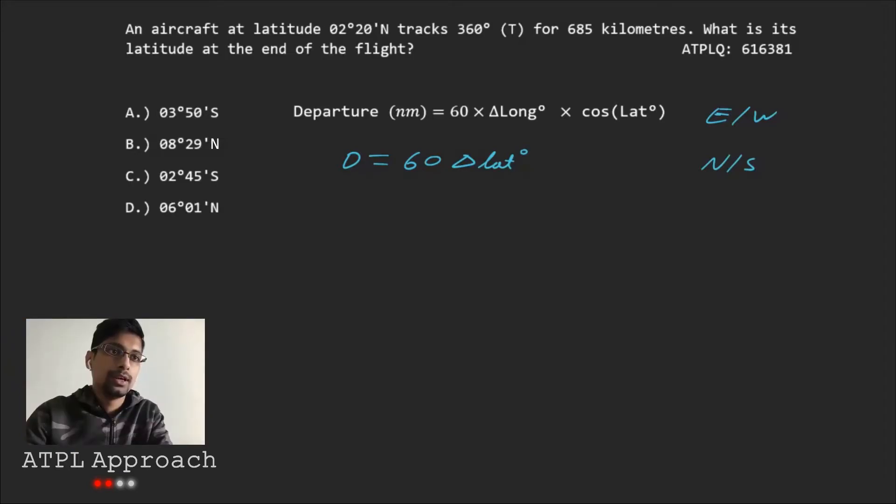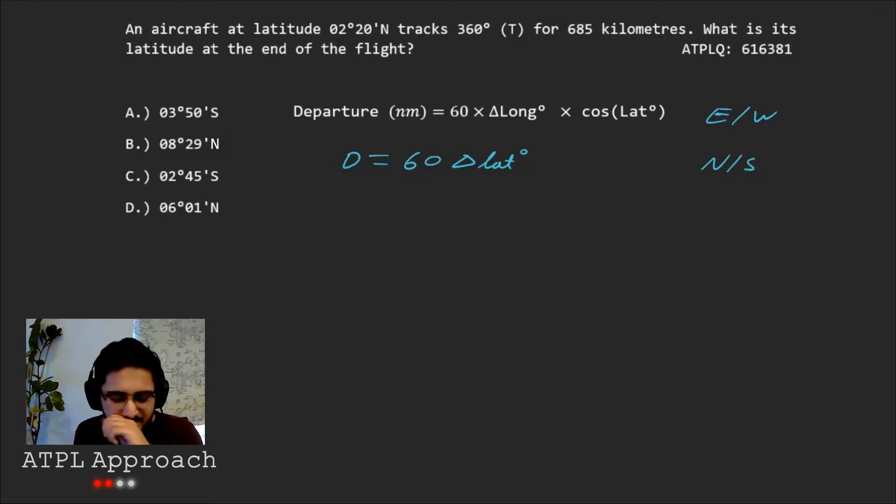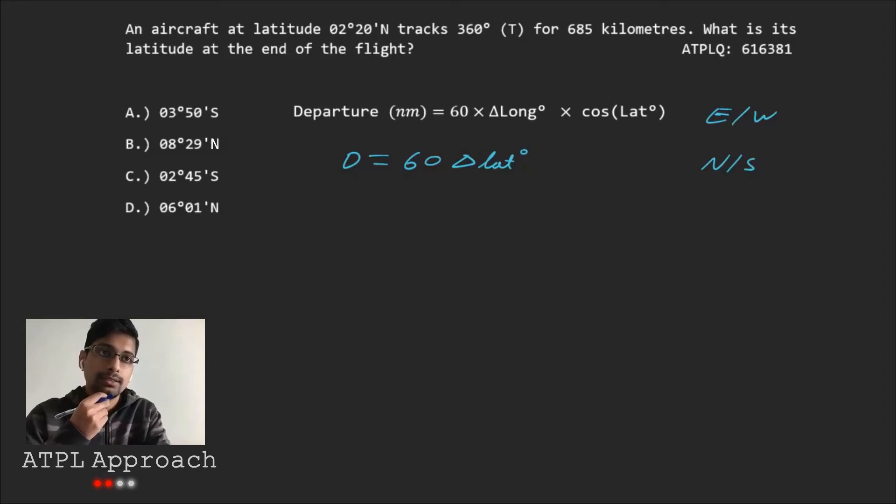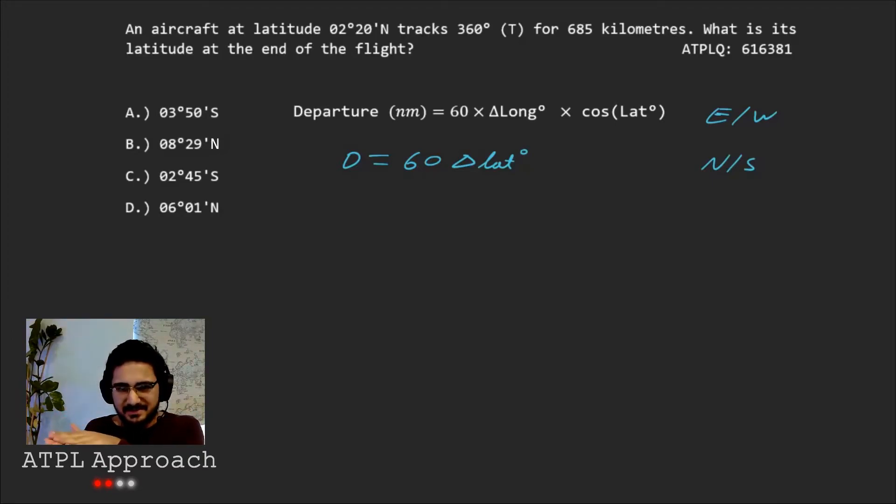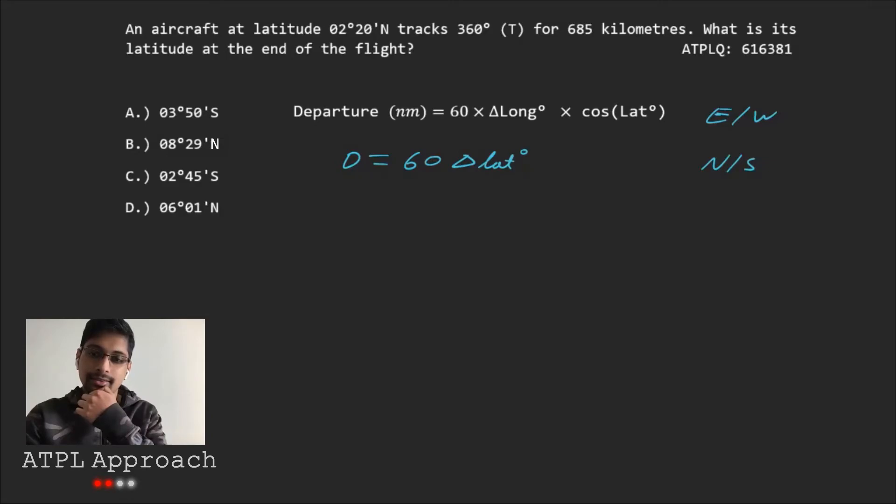So the change in latitude is... So we know... Departure, that means. So we know that it's 685. 685, yeah. It's in kilometers. Yeah. Kilometers, so we need to convert it to nautical miles. Don't really remember how to do that. Okay. So there's also a question that comes up in GenNav, which is what is the ICAO definition of a nautical mile? The definition of a nautical mile is not one minute. The ICAO is not one minute like that. It's not 6080 feet, which is also what other people use.